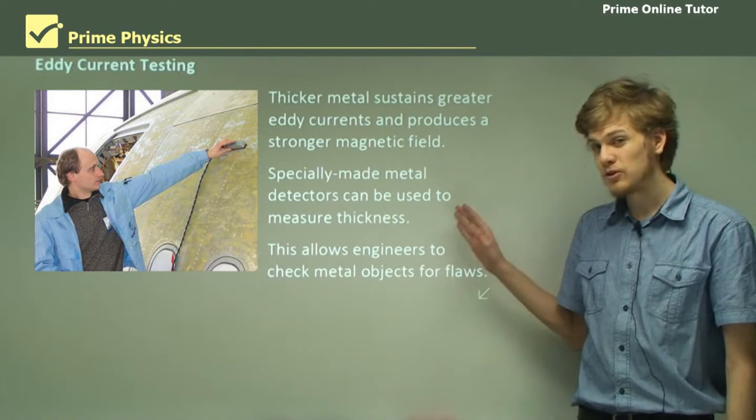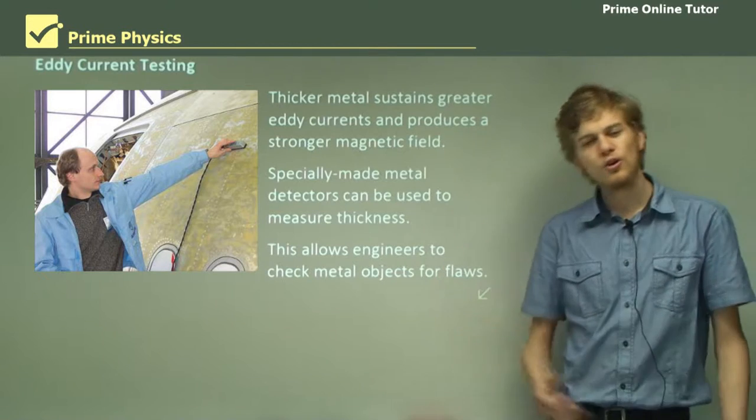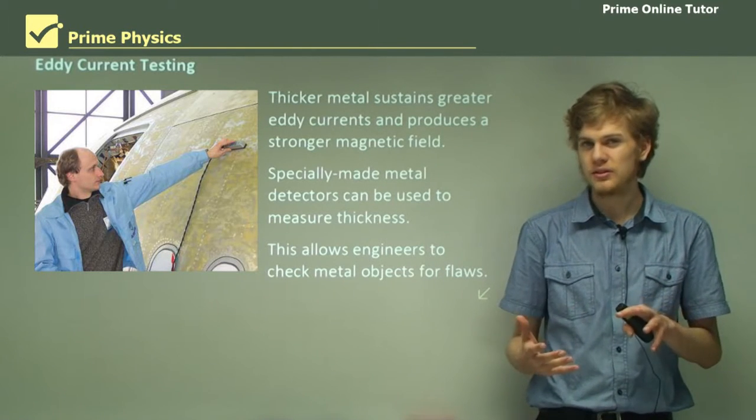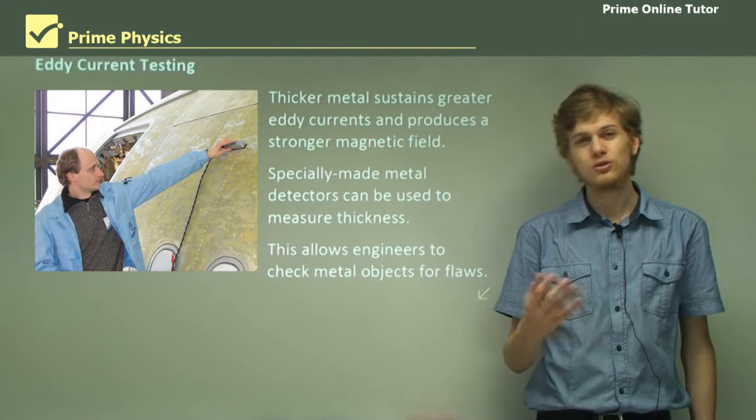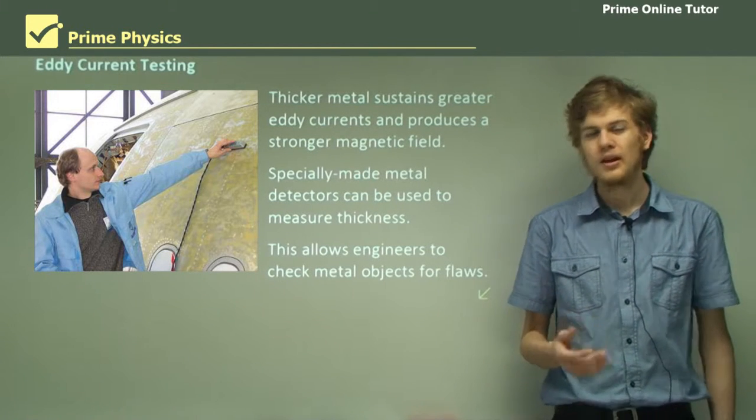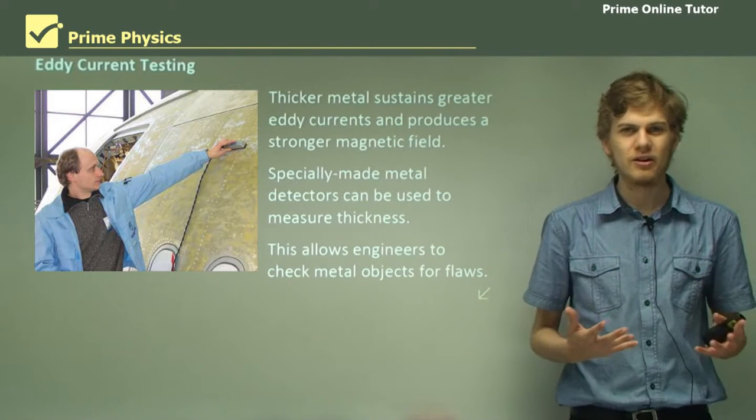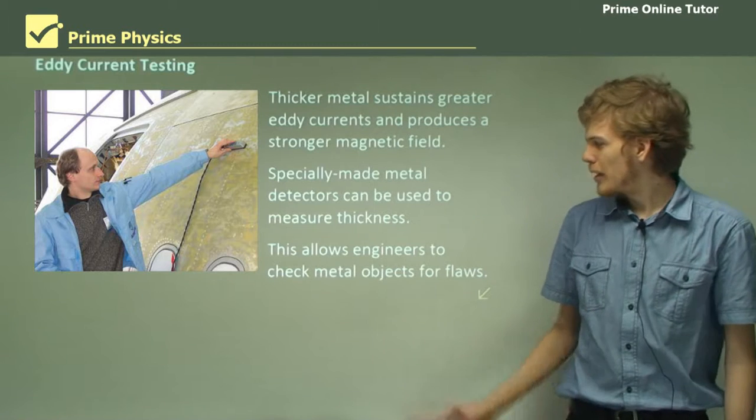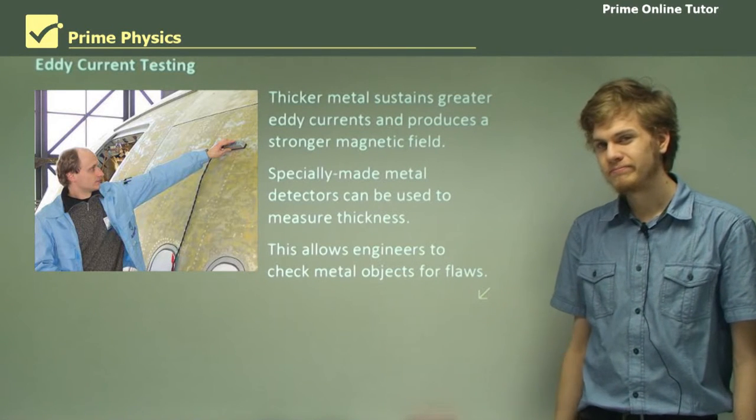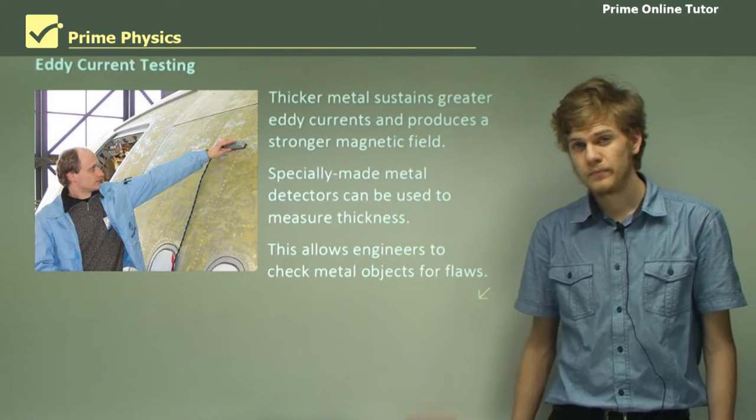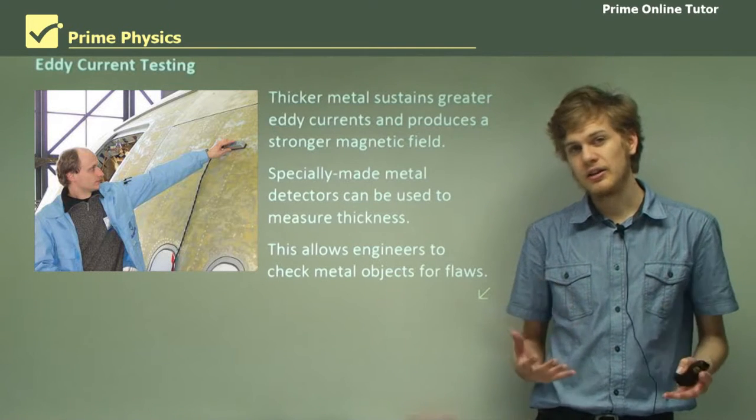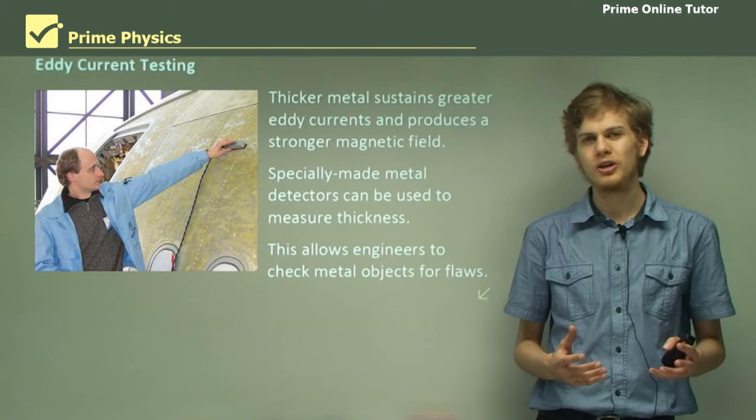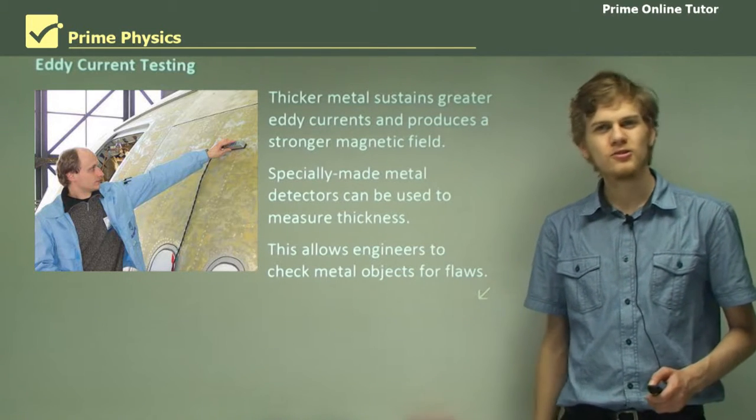If we have one of these special metal detectors, we can go through a big sheet of metal that's meant to be uniform thickness and tell whether parts are too thick or too thin. If they're too thick, they'll produce greater eddy currents, and if they're too thin, they'll produce less eddy currents. In either case, we'll be able to pick up that change. This is the end of the theory. Metal detection and inspection is one of the last uses for eddy currents that we'll be learning about. Let's go on to some questions.